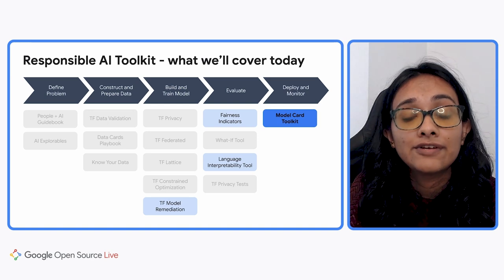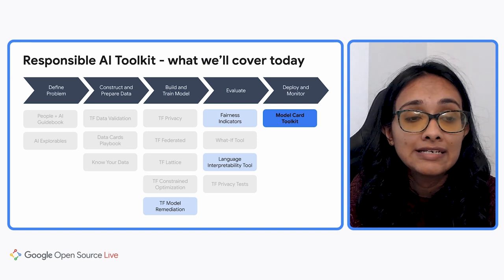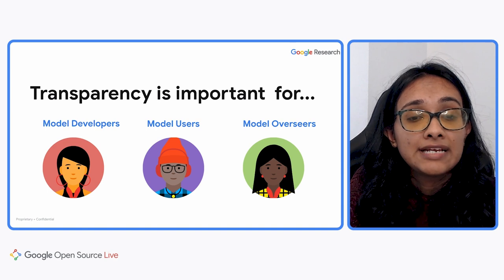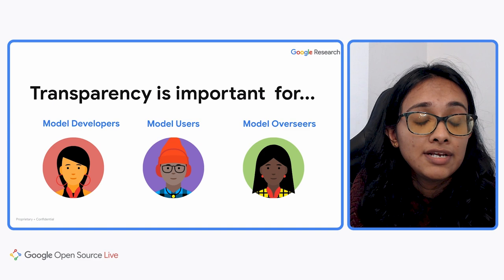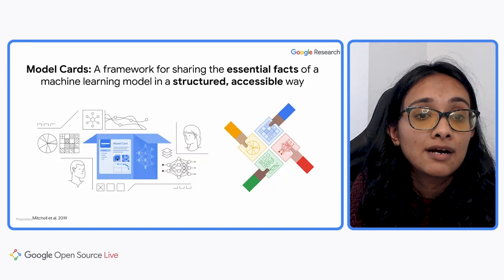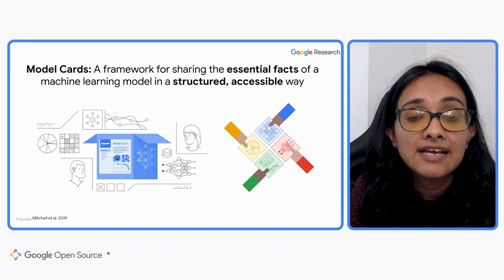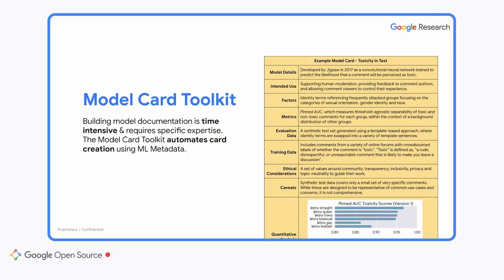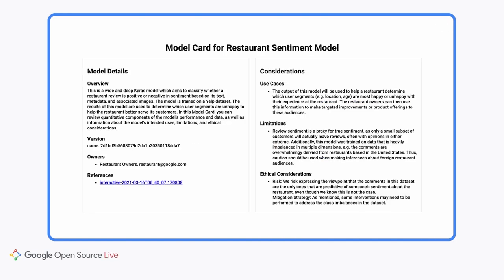As you're about to deploy and monitor your model, you can also use the Model Card Toolkit to generate transparency artifacts to communicate key ethical considerations to your stakeholders. Communicating key gaps and ethical considerations in an ML model is important not only for model owners and maintainers, but also for model overseers and end users. Model cards is a framework that helps you communicate these key ethical considerations. The Model Card Toolkit, which is also an open source offering, helps you generate such model cards and transparency artifacts in an easy fashion.